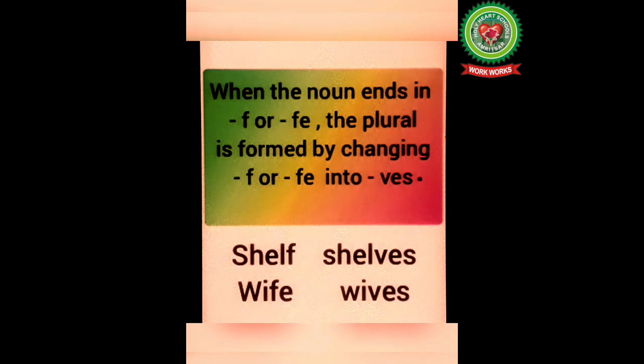First of all, let's revise the rules that I discussed with you last day. The rule is when the noun ends in F or FE, the plural is formed by changing F or FE into VES.